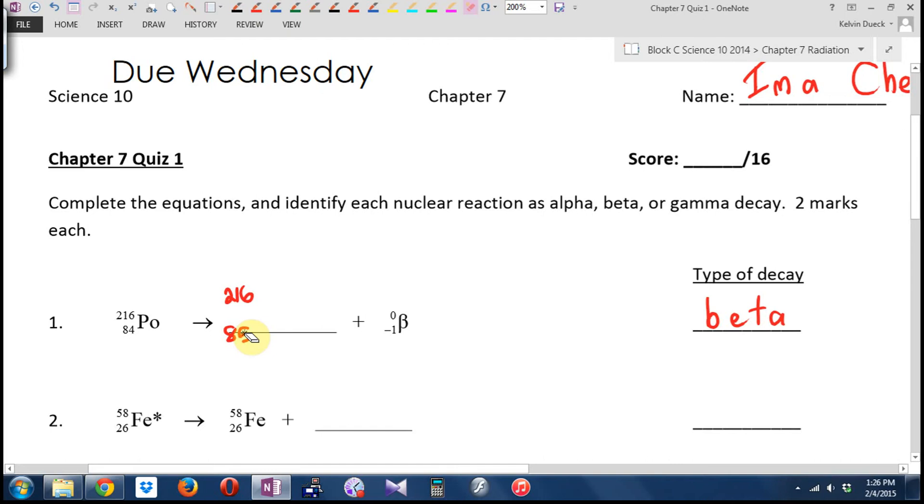And this number then tells me what element it is. I gave away my last periodic table yesterday to somebody who shall remain nameless. What is element number 85? Help me out. AT. AT? Is that actinium or... What is AT?